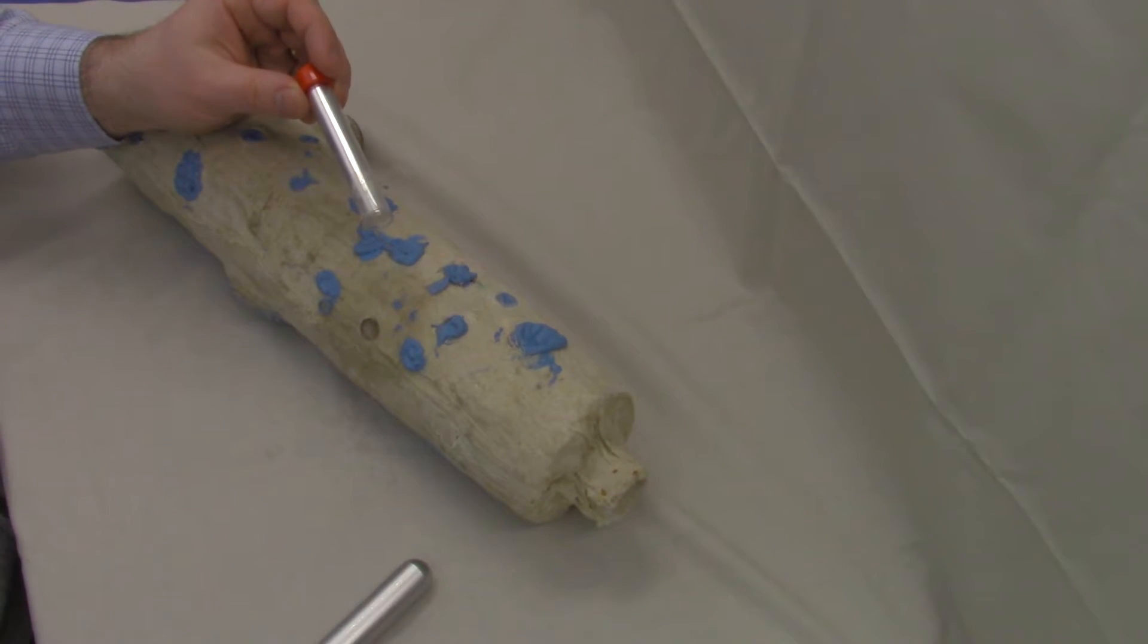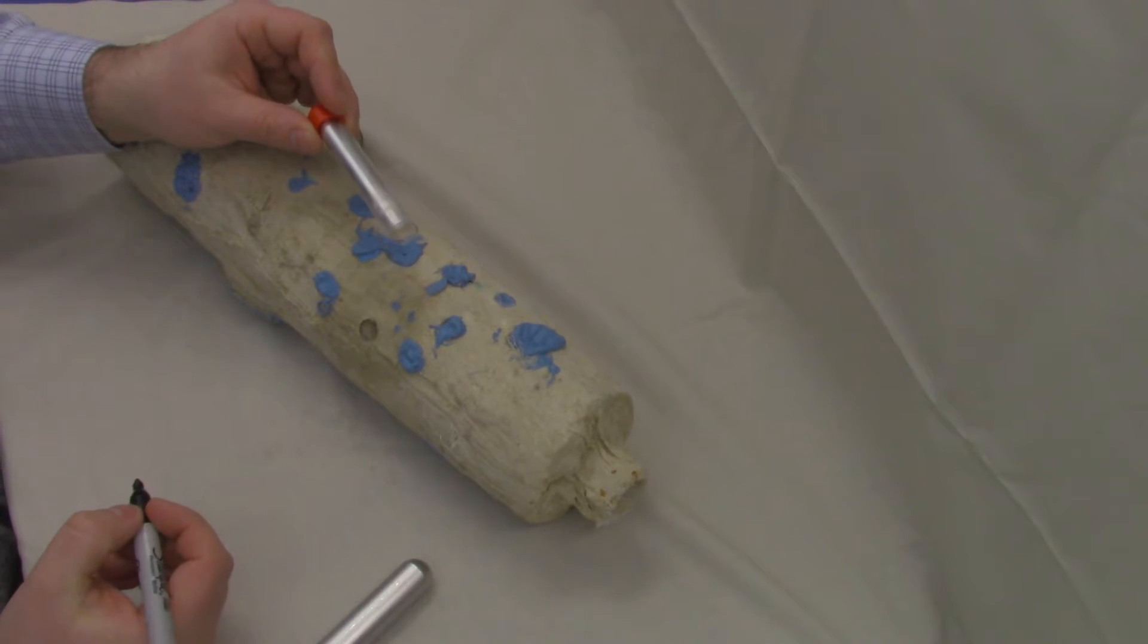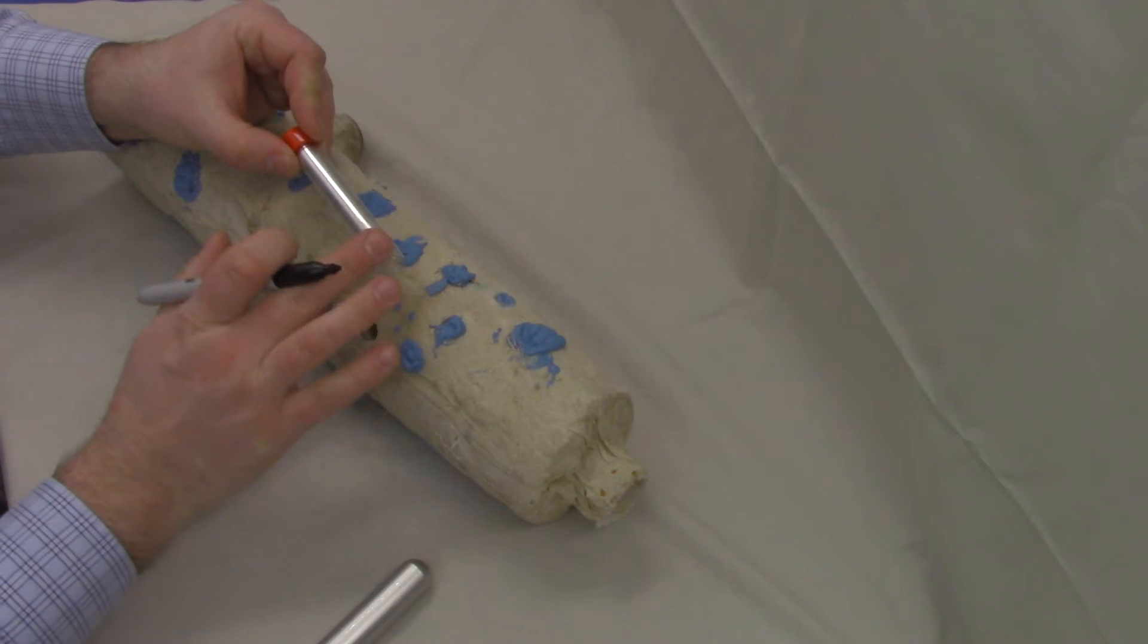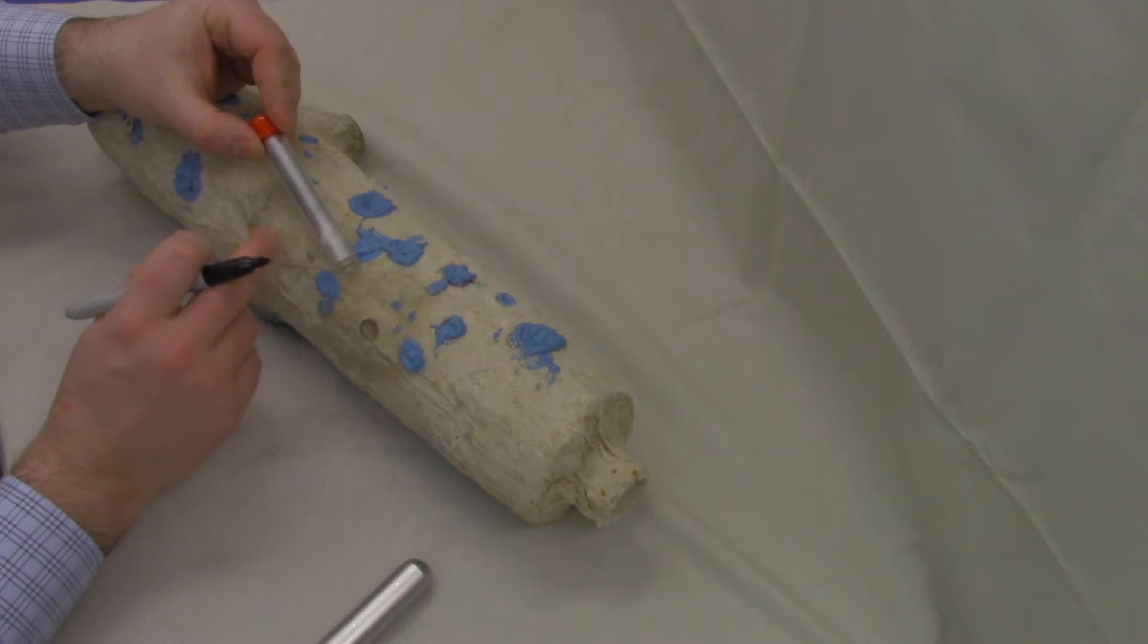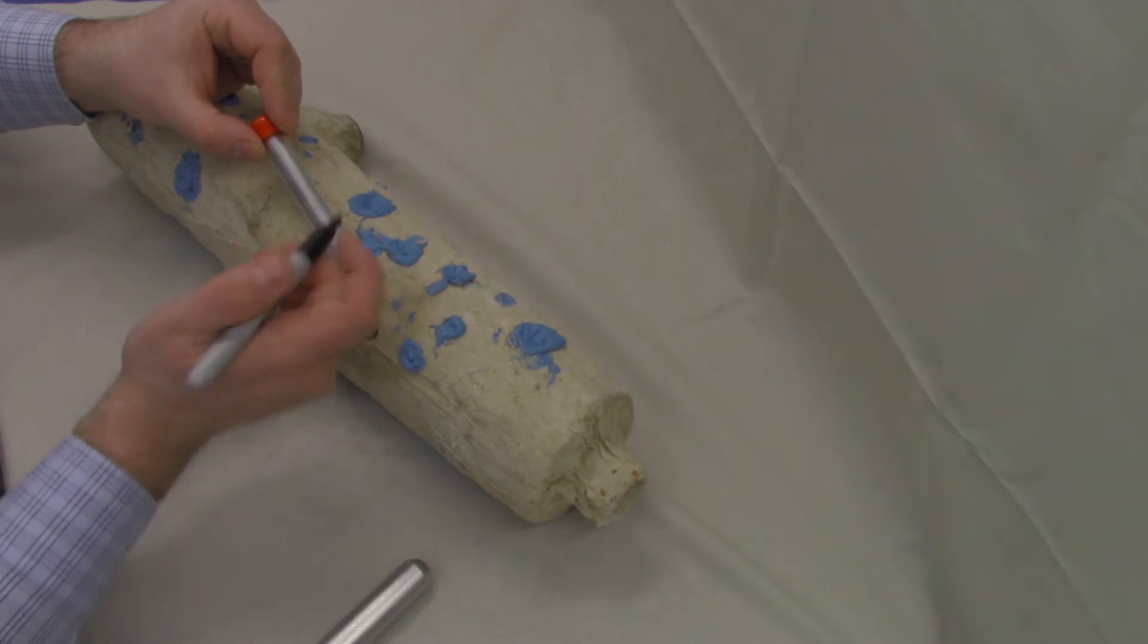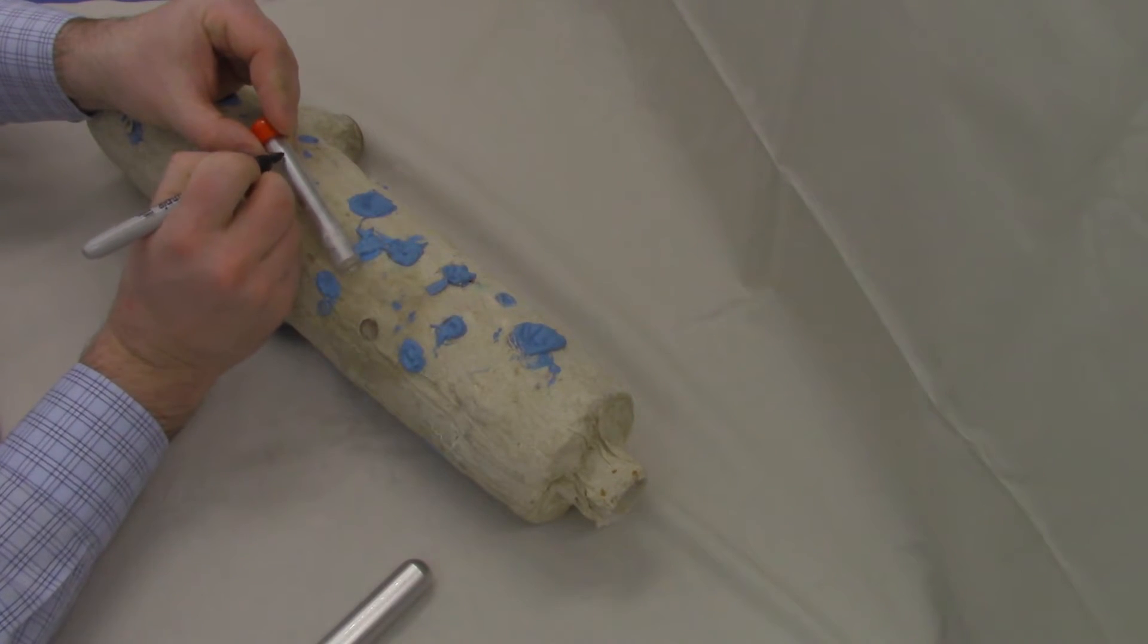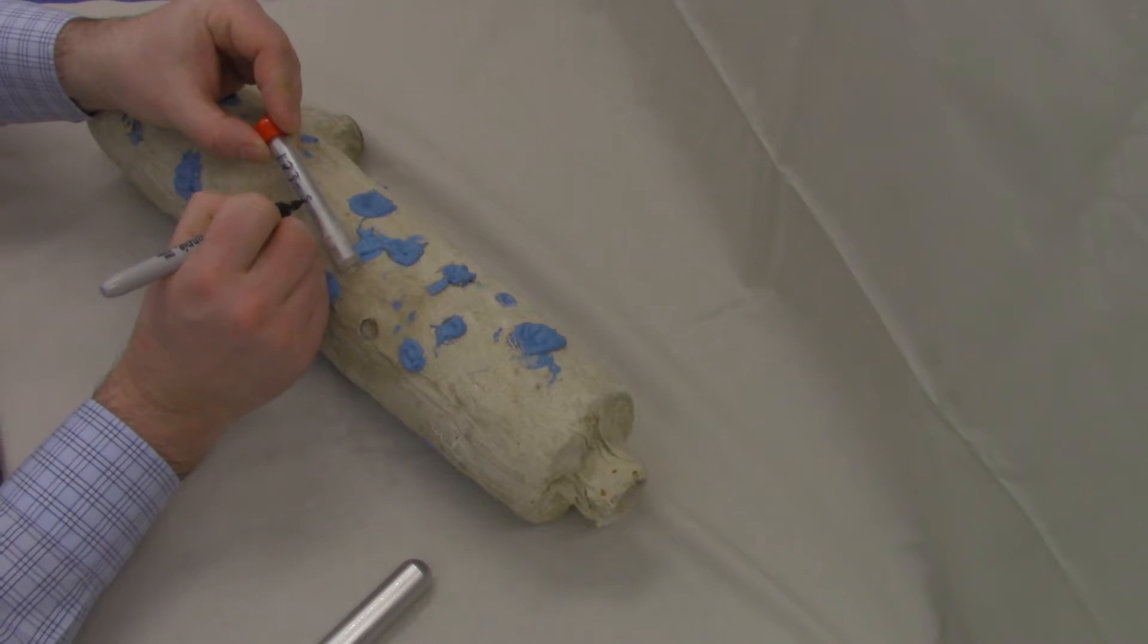In order to prevent your sample from getting confused with other samples on a different project or someone else's samples, you can write right on this tube. We typically do that with a Sharpie. We've also heard of people using a label maker to create their labels and then you just apply the sticker. In this case, I'm going to label it 123 Smith.